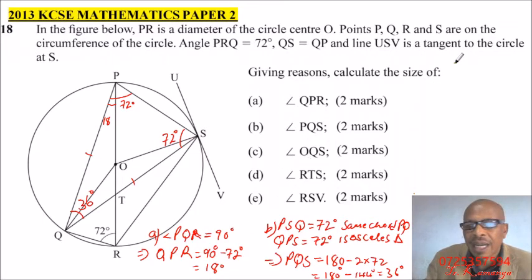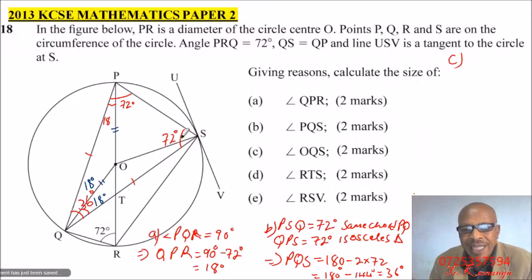Let's come here and have a look at C. We are supposed to find OQS. It is this angle here. Now, already we know this angle is 18 and OQ and OP are the same, that is the radius. Therefore, this angle here is 18, the same as this angle. And therefore, this angle is 18.